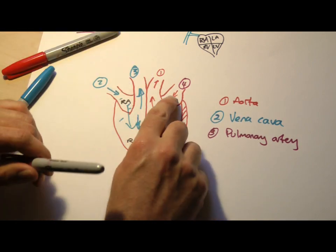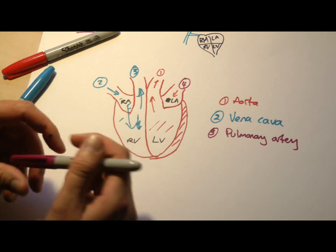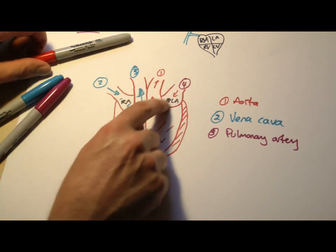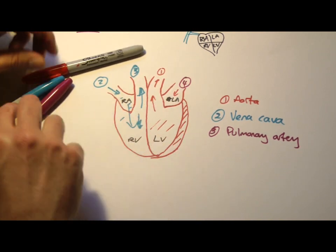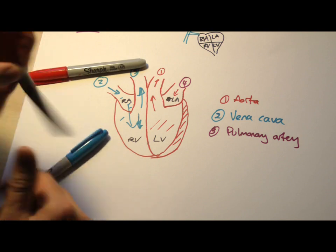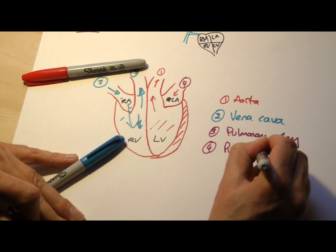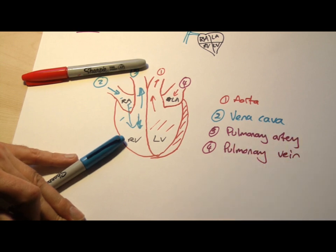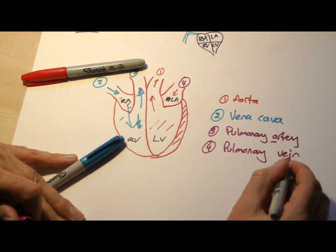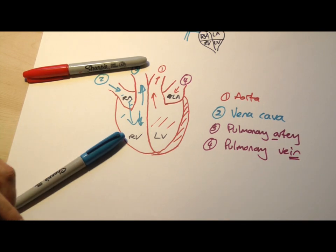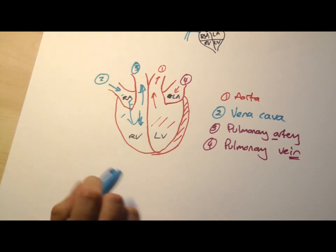And then finally it would come back down nice and oxygenated into here. Back into the left atrium. This is actually oxygenated blood now. But because the blood vessel is coming towards the heart or into the heart, it is a vein. So it's the pulmonary vein. Arteries carry blood away. Veins carry blood in.